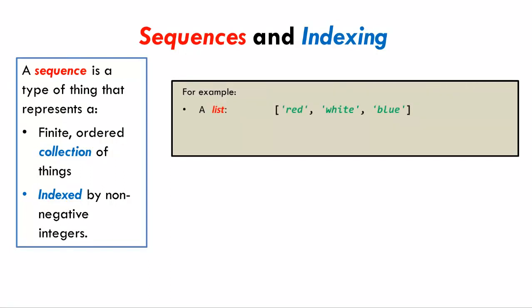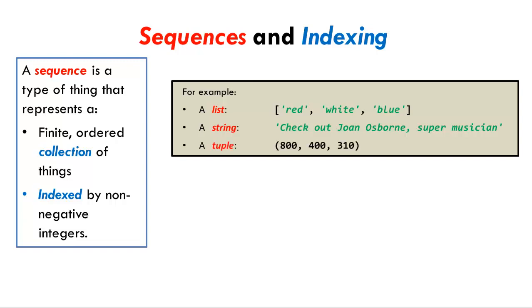Strings themselves are sequences containing characters, as in this one that contains C, H, E, C, K, and so forth. Tuples are another kind of sequence. We'll talk more about them later.